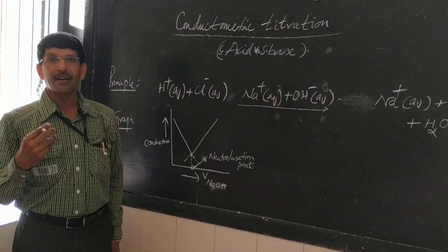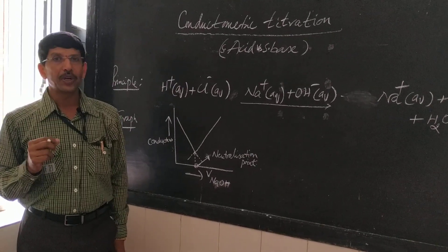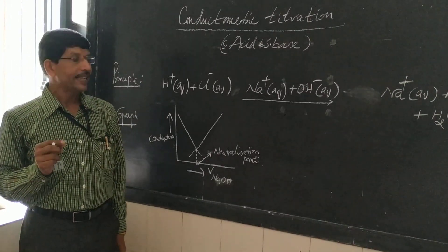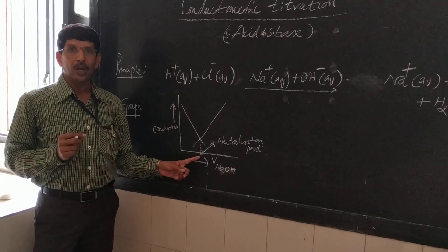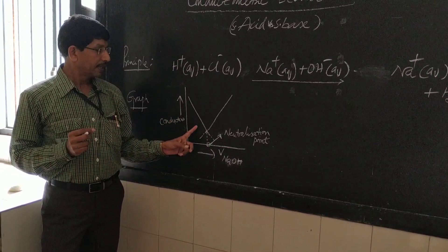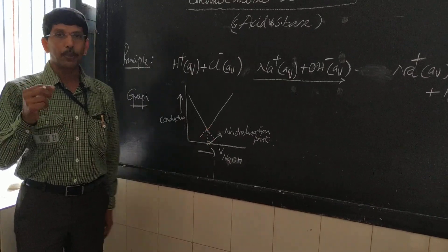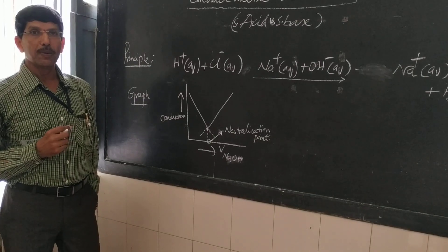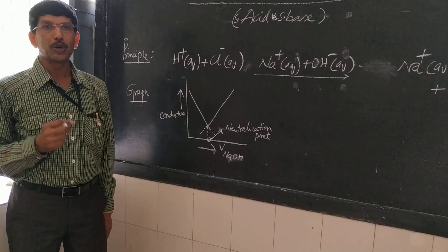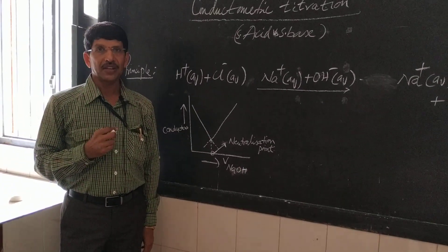Therefore, conductance increases after the neutralization point. The amount of NaOH required for complete neutralization of the taken acid is determined from the graph of volume of NaOH versus conductance of the solution. As shown in the graph, we get a graph in the shape of two straight lines which, when extrapolated, intersect, and the volume of NaOH corresponding to the point of intersection is the volume consumed by the acid taken. Now we shall look at the demonstration of the experiment.